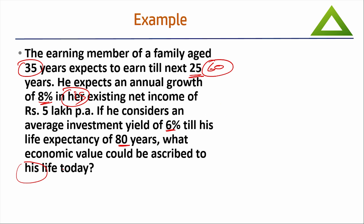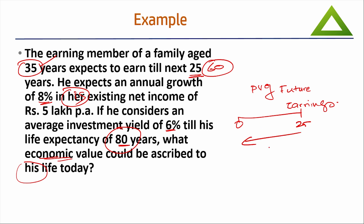The question asks for economic value — that is about finding the present value of his future earnings, which is the income replacement approach, not the expense replacement approach. So the life expectancy of 80 years given in the question is a distractor and is not part of the solution. We consider his age as 35 and remaining working years as 25, and find the present value of income generation for the next 25 years. In examination, be very precise about which approach to follow. Most students have confusion between income replacement and expense replacement approach when solving insurance planning questions.